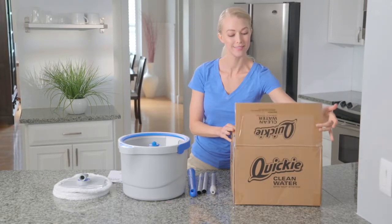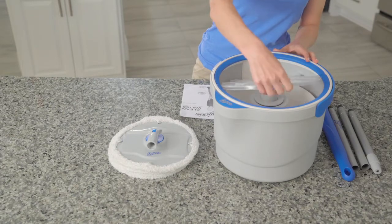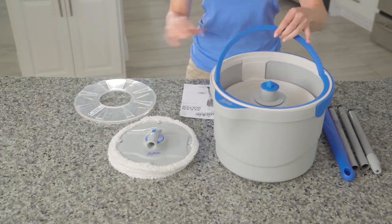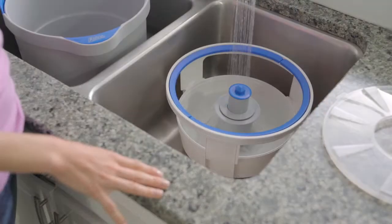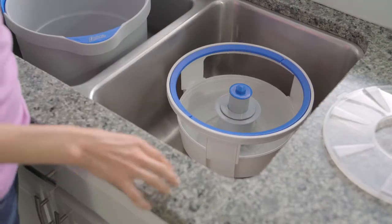To set up your Quickie Clean Water Spin Mop System, just remove the clear lid. Use the two handles to raise and remove the inner bucket and place into the sink. Fill to the max line with clean water.